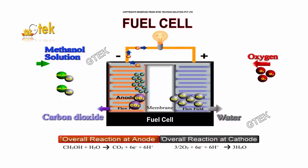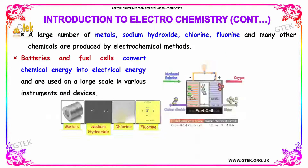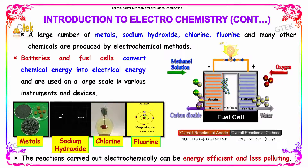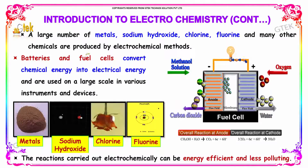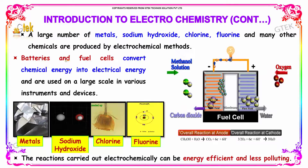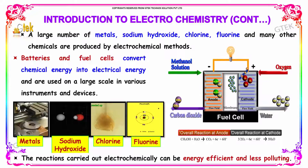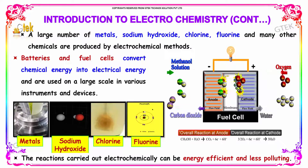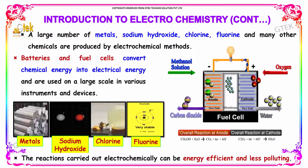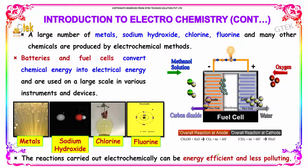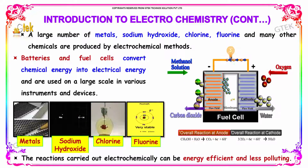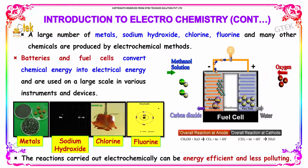The reaction of fuel cells: a large number of metals, sodium hydroxide, chlorine, fluorine, and many other chemicals are produced by electrochemical methods. Batteries and fuel cells convert their chemical energy into electrical energy and are used on a large scale in various instruments and devices. The reactions carried out electrochemically can be energy efficient and less polluting.